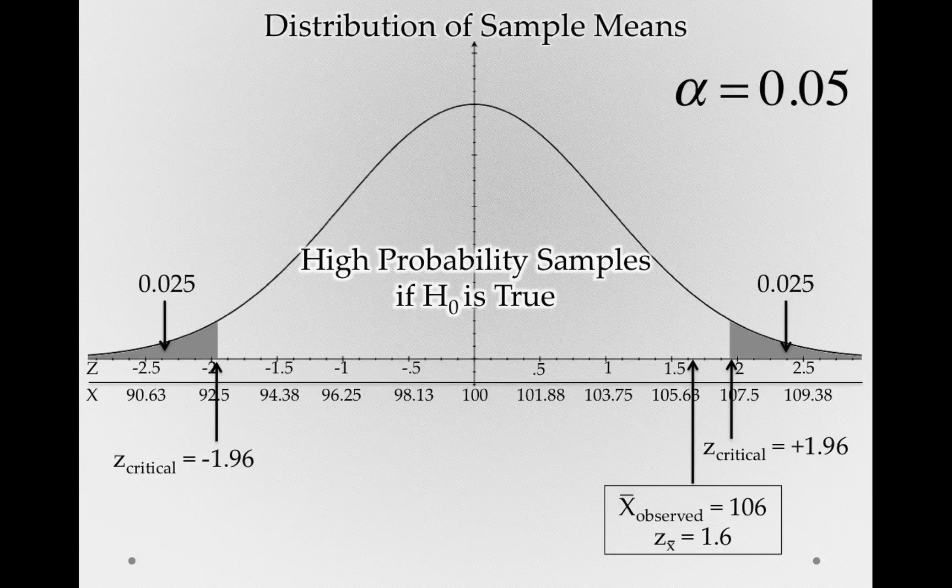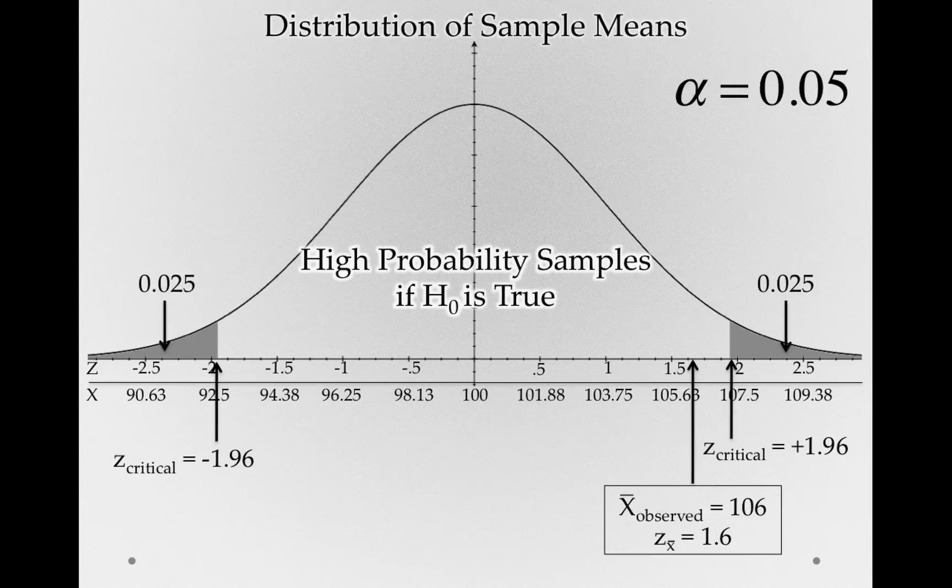Now, in this case, our p-value was greater than alpha. That is, it was not of a class of evidence that was extreme enough for us to be willing to reject the null hypothesis as a reasonable explanation.